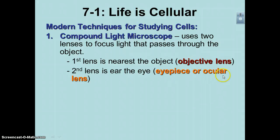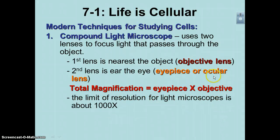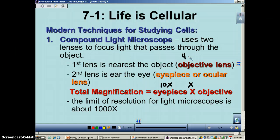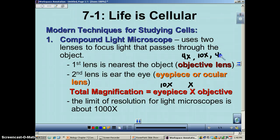Each of these lenses has its own magnification power. The eyepiece is almost always 10 times — we'll just use 10x. The objective lens will vary. You have a red lens known as the scanning or low power; that one's 4x. You have a medium power, which is typically a 10x. And then you'll have a high power, which would be a 40x.